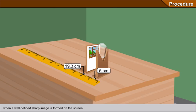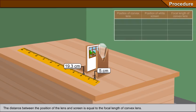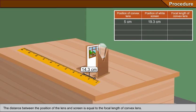The distance between the position of the lens and screen is equal to the focal length of convex lens. Record the focal length of lens.